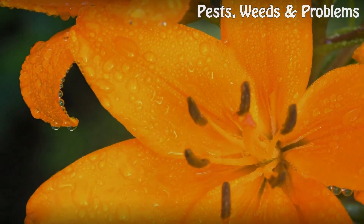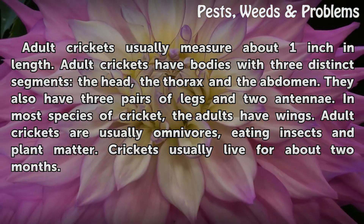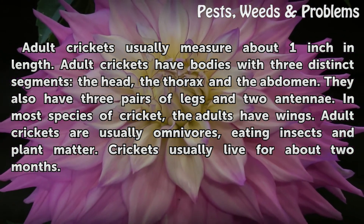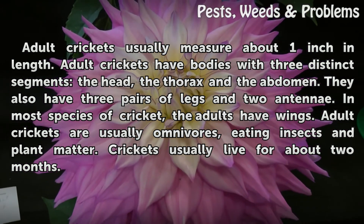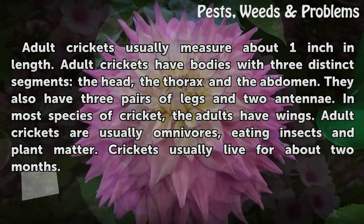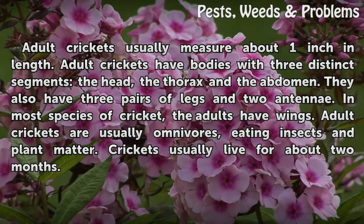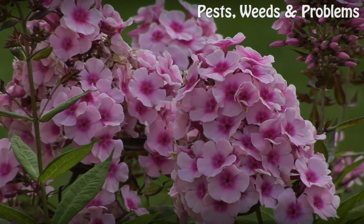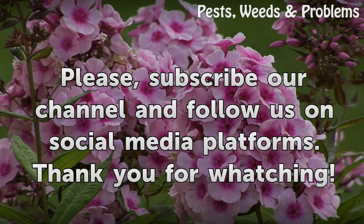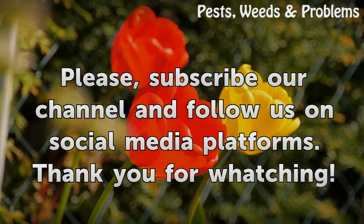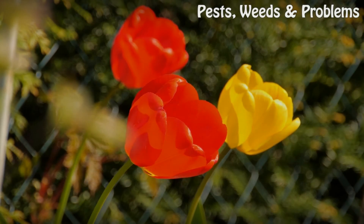Adults. Adult crickets usually measure about one inch in length. Adult crickets have bodies with three distinct segments: the head, the thorax, and the abdomen. They also have three pairs of legs and two antennae. In most species of cricket, the adults have wings. Adult crickets are usually omnivores, eating insects and plant matter. Crickets usually live for about two months.